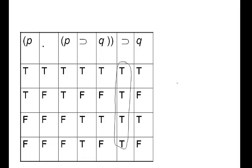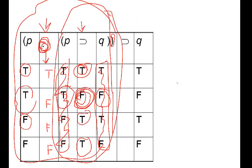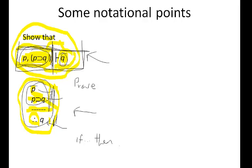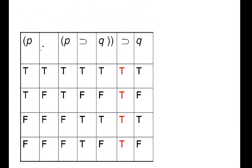So we know that this argument is valid. Why? Because there are no circumstances in which, if you have the stuff to the left of the turnstile, you won't get the stuff to the right. Under any circumstances, the conclusion follows from the premises — and we showed that with the truth table. Good — let's do some more examples, but that'll do for now.